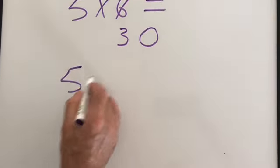Try a harder one. Five times 14 equals. Half of 14. You've got it. Seven. Put a zero on the end. Try some longer numbers.